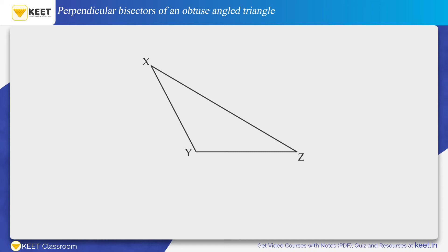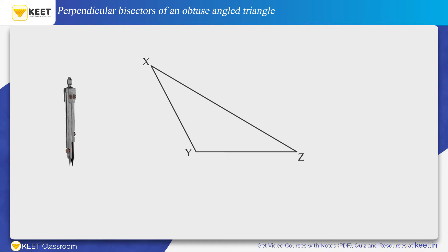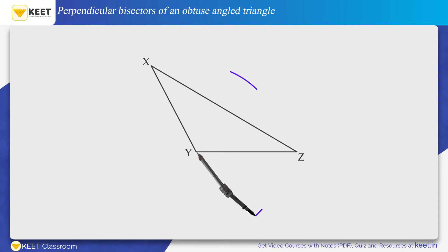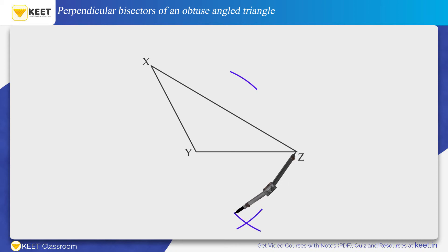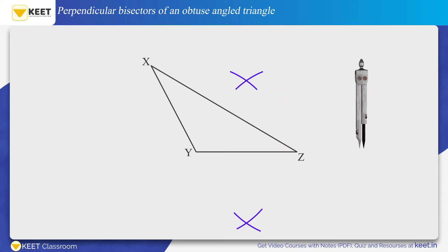Now let us draw the perpendicular bisectors to the three sides of the obtuse angle triangle. Let us first draw the perpendicular bisector of side YZ. From vertex Y, make arcs on both the sides of YZ as shown on the screen. Similarly, from vertex Z, cut the arcs made from vertex Y. Name the intersection of the arcs as P and Q respectively. Now draw a line passing through points P and Q. Thus, the line PQ is the perpendicular bisector of YZ.